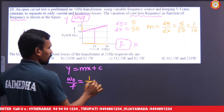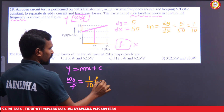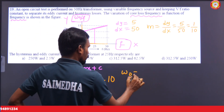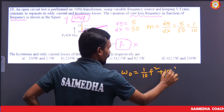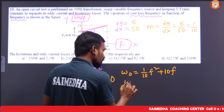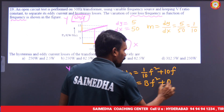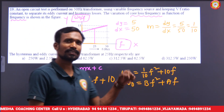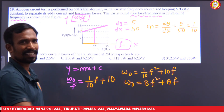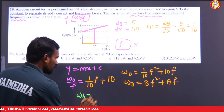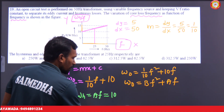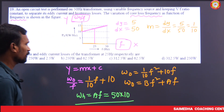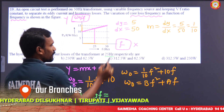So W₀ equals (1/10) f² plus 10f. According to the standard formula, iron losses equal bf² plus af, where b is the eddy current coefficient and a is the hysteresis coefficient. So b equals 1/10 and a equals 10. To calculate hysteresis losses at 25 Hz: hysteresis loss equals a times f equals 10 times 25 — wait, a is 10 and f is 25.